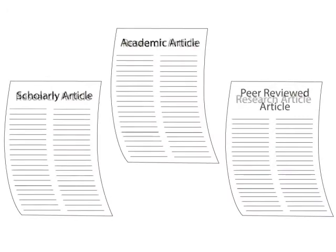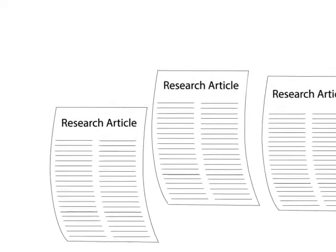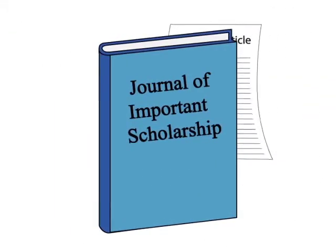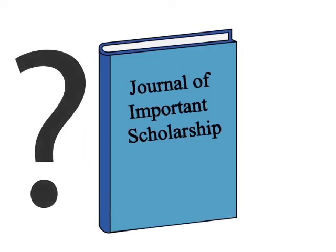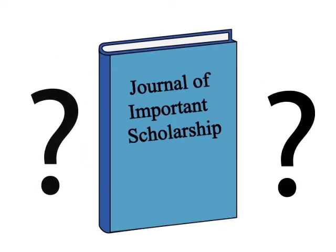Essentially, these are all different ways of describing the same thing: research articles that have been published in scholarly journals. But what is a research article, and how does it get published in a scholarly journal?